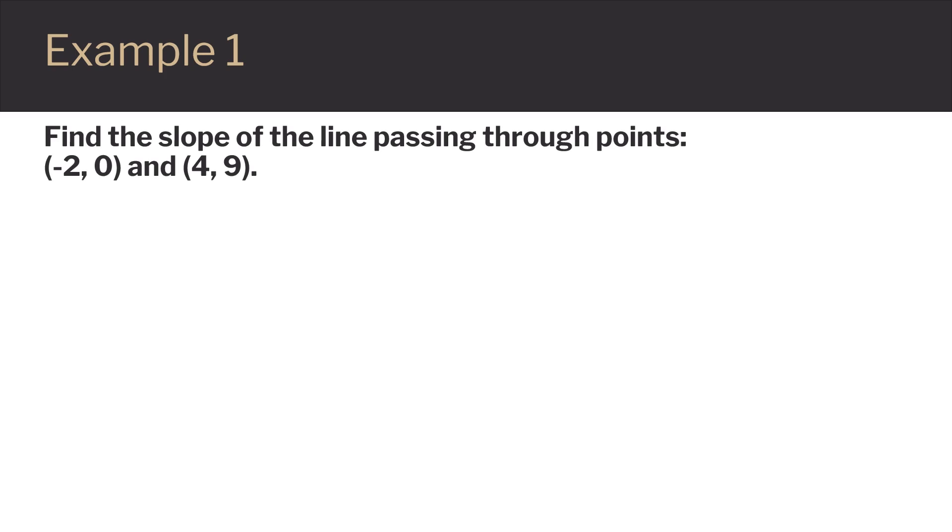For this example, we want to find the slope of a line passing through the points (-2, 0) and (4, 9). Since m equals y2 minus y1 over x2 minus x1, we are going to plug in the values we are given.